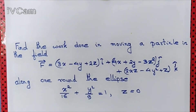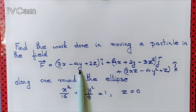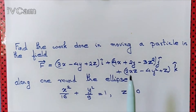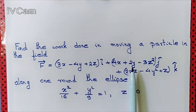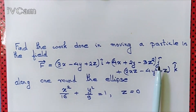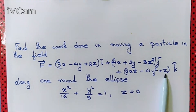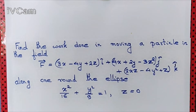So we are given the force field F equal to (3x minus 4y plus 2z) along the i component, (4x plus 2y minus 3z squared) along the j component, and (2xz minus 4y squared plus z) as the k component. We need the work done for one complete round of the ellipse.